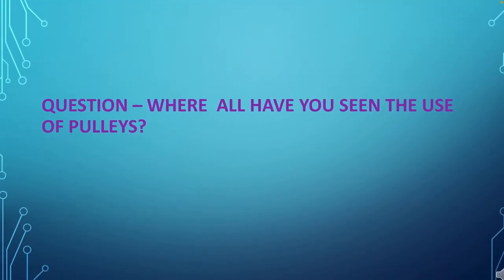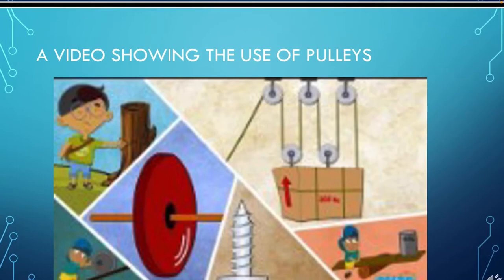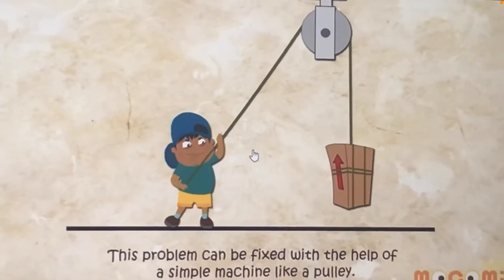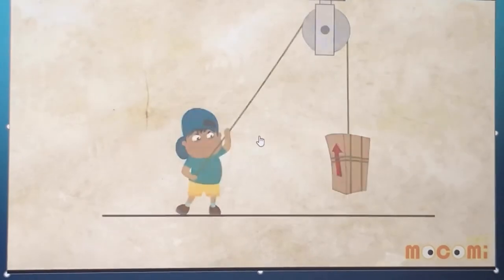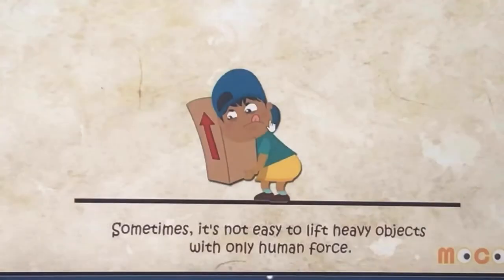Question: Where all have you seen the use of pulleys? Let us see a video showing the use of pulleys. With the help of a pulley, a child is lifting a heavy object so easily. A basic pulley is a simple machine — if you are not able to lift heavy objects, you use a simple machine called a pulley.